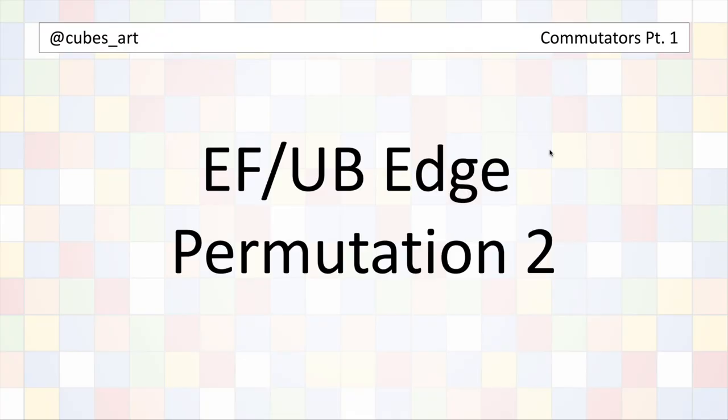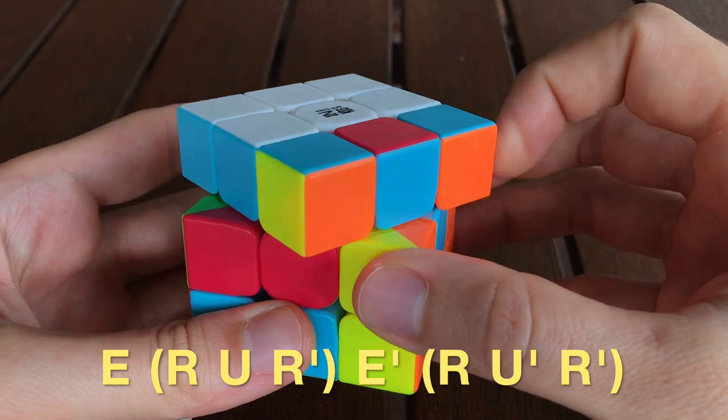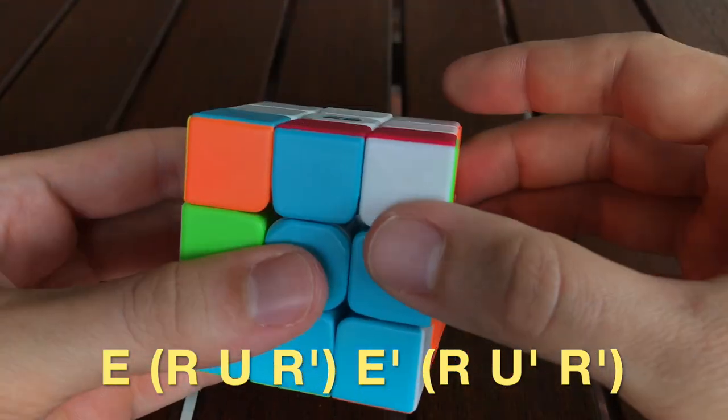Now let's put this sub-algorithm into the commutator structure. So again, the first move will be E, then we apply the sub-algorithm, undo E, and undo the sub-algorithm.